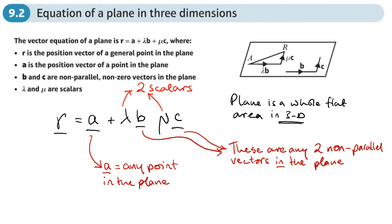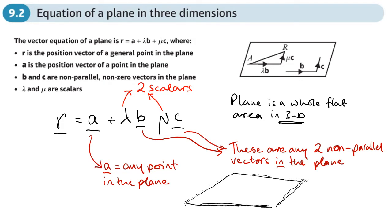The diagram above shows a sort of plane. Let me try and replicate that or draw it a little bit better. So imagine this is a whole flat area in 3D. We have a point in the plane — let's put a point there, so this would be A. Then we have two vectors in the plane: one going this way, let's call this vector B, and another vector in the plane like this, which is not parallel to B — and that would be vector C.